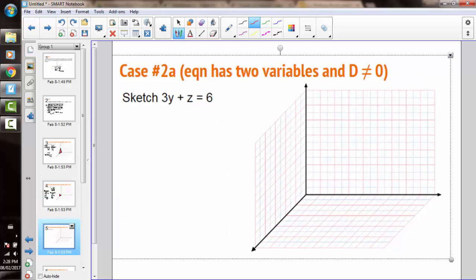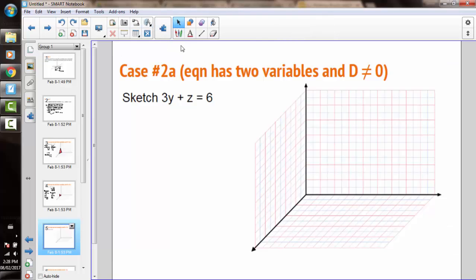In case 2a, our equation has two variables, and the d value does not equal 0. We're looking at 3y plus z. So we're going to find intercepts again. So we're going to find the z-intercept, which would happen when y is 0. So 3 times 0 plus z equals 6. So we have a z-intercept of 6. Right about there.